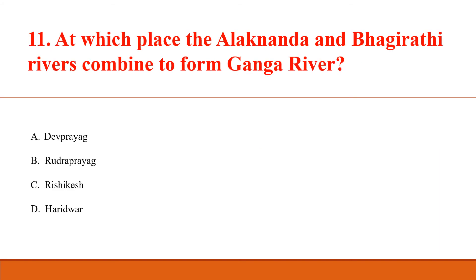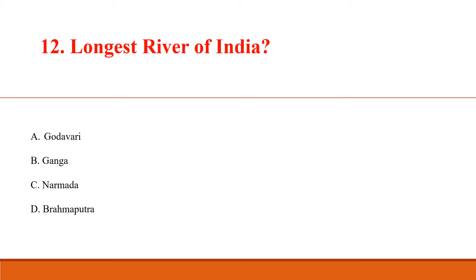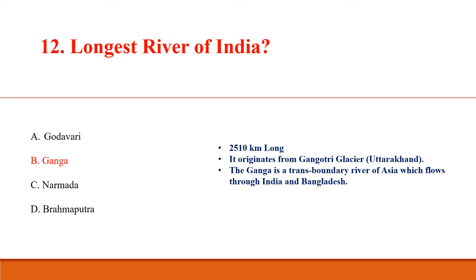At which place do the Alaknanda and Bhagirathi rivers combine to form the Ganga river? Answer A: Dev Prayag. Dev Prayag is a town in Tehri Garhwal district in the state of Uttarakhand, India. Longest river of India: Answer B: Ganga, 2,510 km long. It originates from Gangotri glacier, Uttarakhand. The Ganga is a transboundary river of Asia which flows through India and Bangladesh.